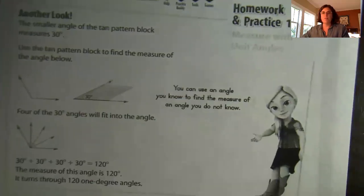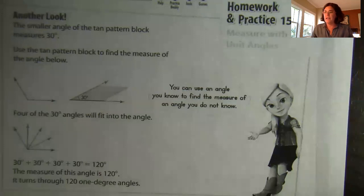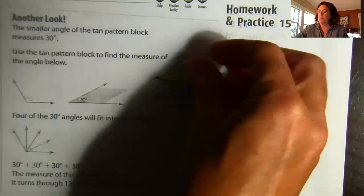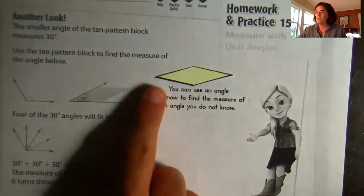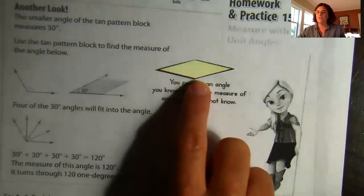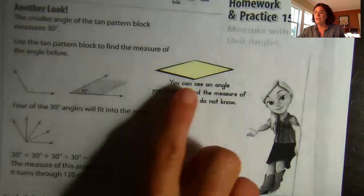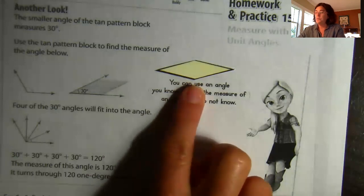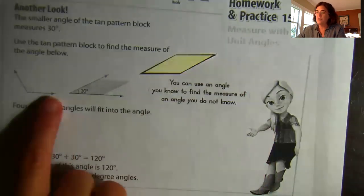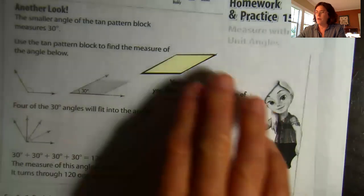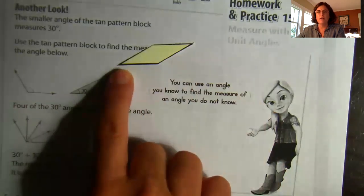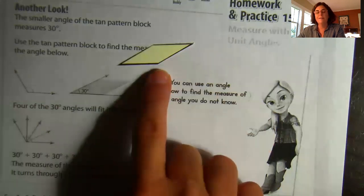And we're going to start with this problem right at the top of 15-3. It says that we can use a tan pattern block to find the measure of the angle below. Now we see that we're given the measurement of the tan pattern block. This small angle in the tan pattern block is 30 degrees. The bigger angle is 150 degrees. So what we can do then is we can use our knowledge of how many degrees each of these angles is worth to find the measurement. So we're looking for the measurement of this obtuse angle, and I see that it's larger than the smaller angle of the tan pattern block but it's smaller than the larger angle.